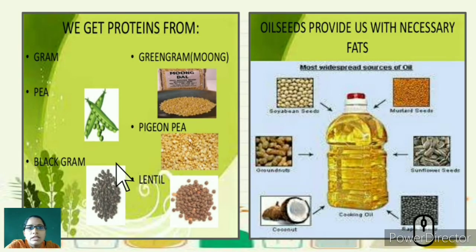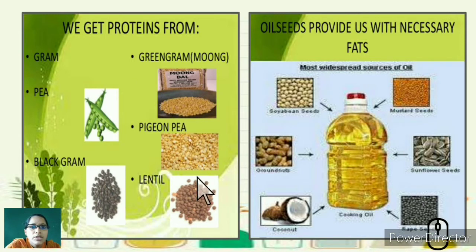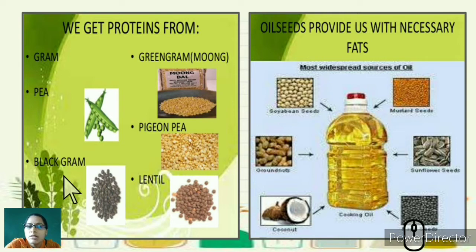Proteins come from gram, peas, green gram, pigeon pea, lentils, black gram, and other pulses. Certain fungi such as mushrooms also contain a good amount of protein.